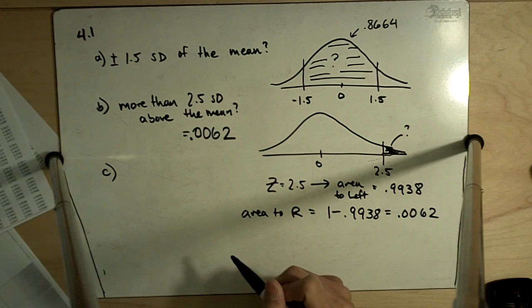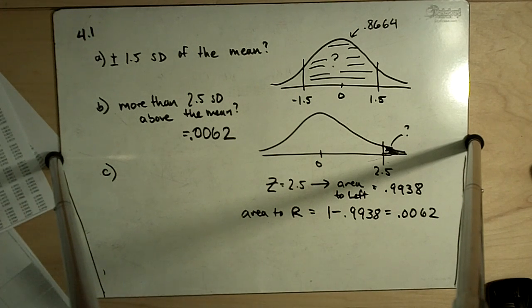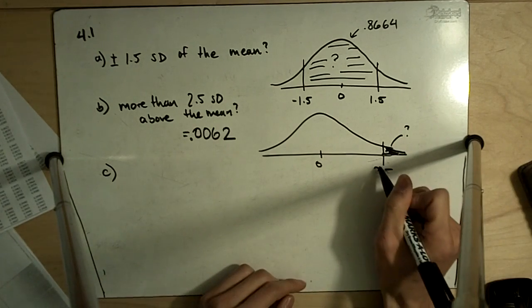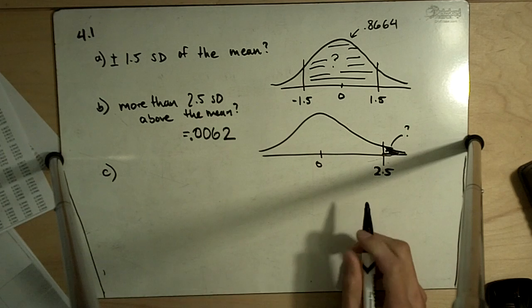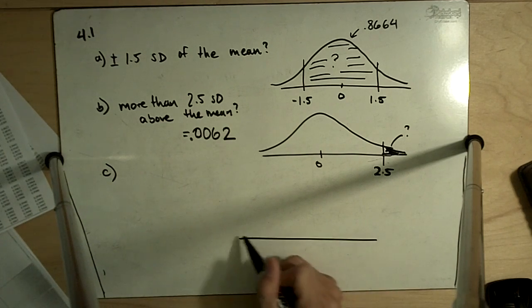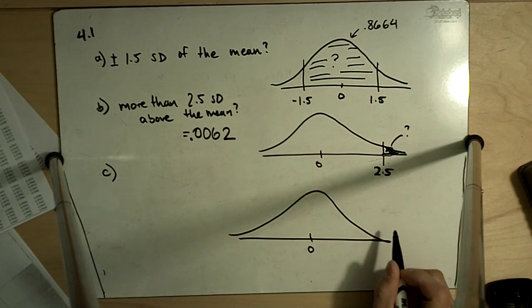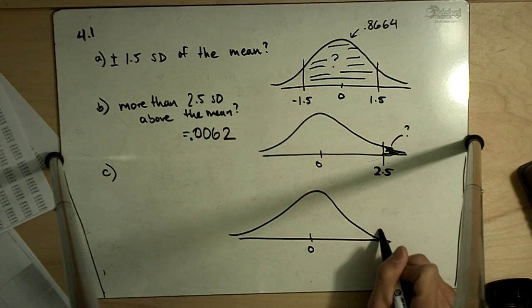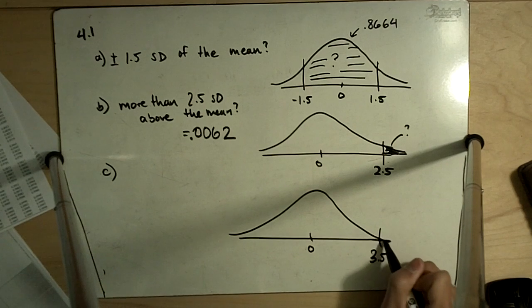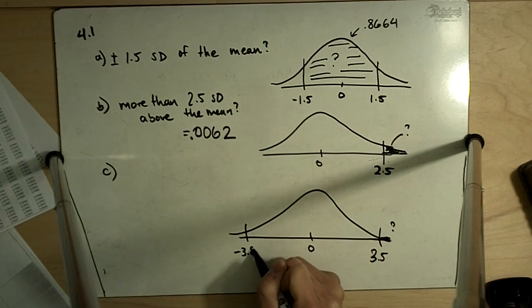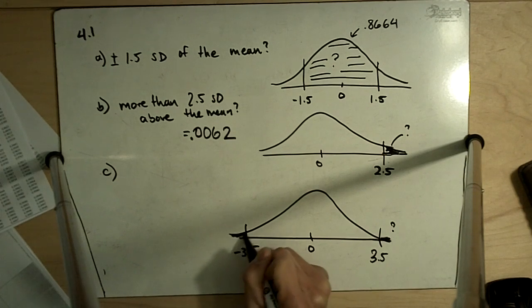Part C says: more than 3.5 standard deviations away from the mean, so above or below the mean. We have our normal distribution centered at 0. We want to know at 3.5 standard deviations, what is out here? And at negative 3.5 standard deviations, what is out here?